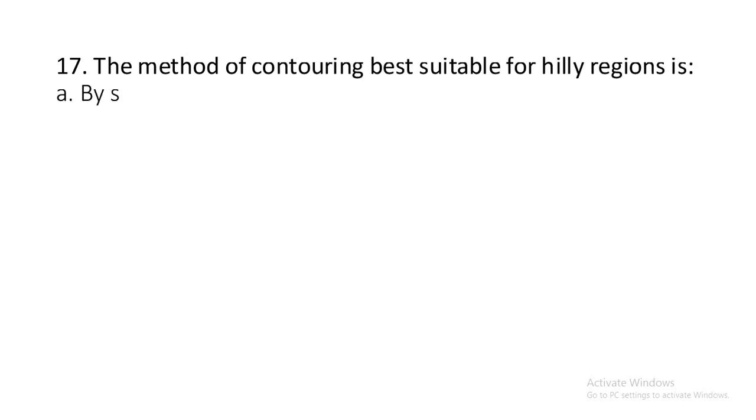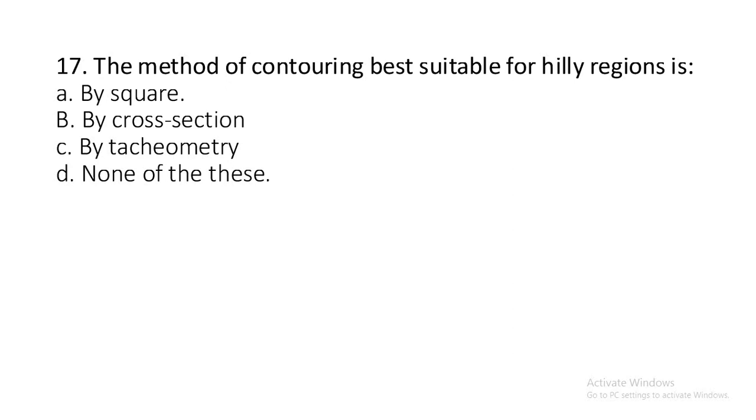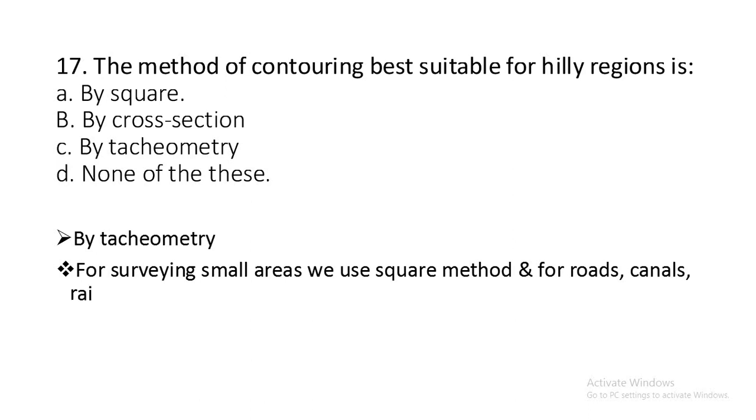Moving on to our last question of this series. Question number seventeen: The method of contouring best suitable for hilly regions is by square, by cross section, by tachymetry, or none of these? By tachymetry. For surveying small areas, we use square methods, and for roads, canals, and railways, we use method of cross section.